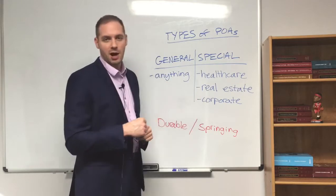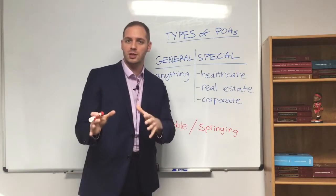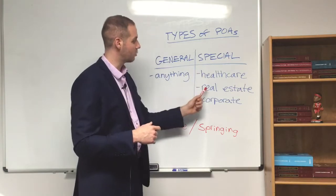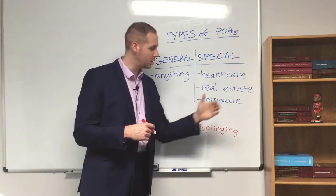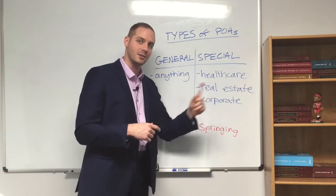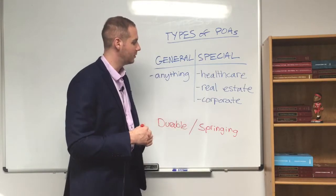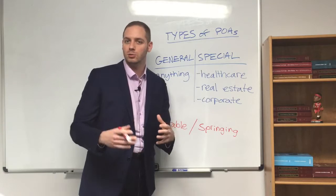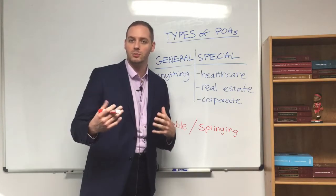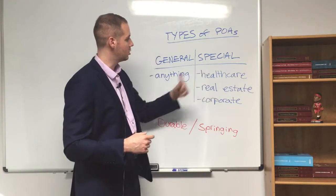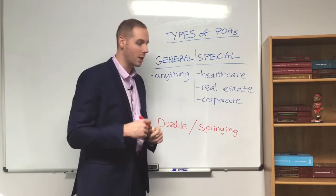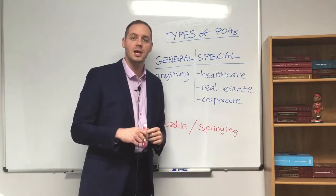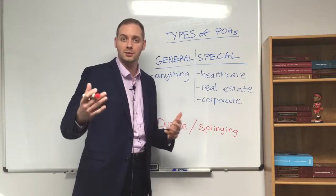A real estate power of attorney is another example. For certain types of real estate transactions, you need a special power of attorney that grants, for this specific legal property with its legal description, that X has this authority. So if you were closing on a home but couldn't make closing — you were going out of town or something unforeseen was happening — you could draw up a special power of attorney granting your sibling the power to stand in on your behalf and execute the documents to complete that transaction.